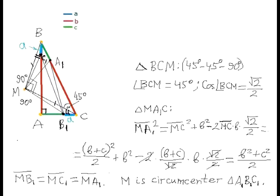Finally, from triangle MA1C by the law of cosines, MA1 squared equals MC squared plus b squared minus 2·MC·b·cos(45°), which equals b squared plus c squared over 2. This proves that the lengths of segments MB1, MC1, and MA1 are equal, which means that M is the circumcenter of triangle A1B1C1. Thus, we have proved the converse of the problem statement: every right-angled triangle has property M.